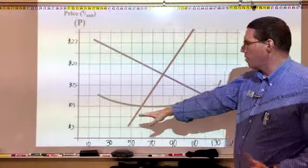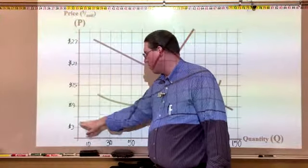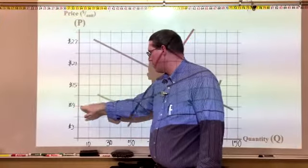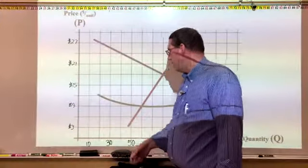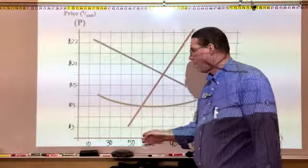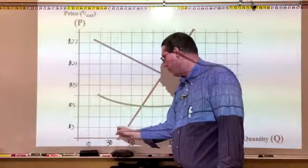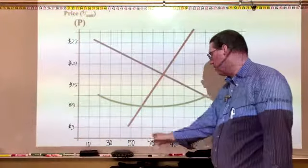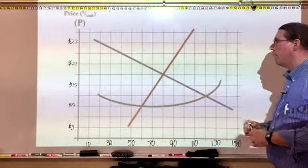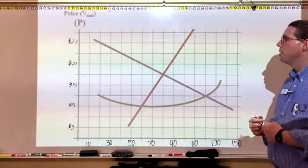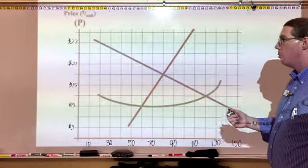The price goes up by $3 at a time: $3, $6, $9, $12, $15, and so on. On the quantity axis we're going up by 10 at a time: 10, 20, 30, 40, 50, etc. I'm going to identify a point and I want you to identify the price and the quantity at that point.